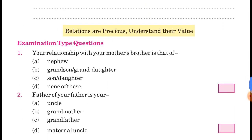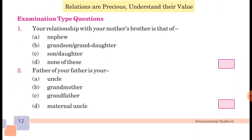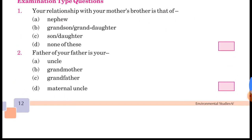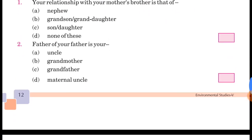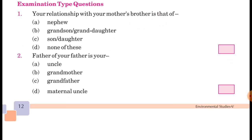Next, examination type questions देखते हैं। Your relationship with your mother's brother is that of — आपका जो संबंध है अपने mother के brother से वो होगा: A. Nephew, B. Grandson/Granddaughter, C. Son or Daughter, D. None of these। Mother's brother को आप mama कहते हैं, तो आप उनके भांजे या भांजी लगेंगे — so answer is A. Nephew।